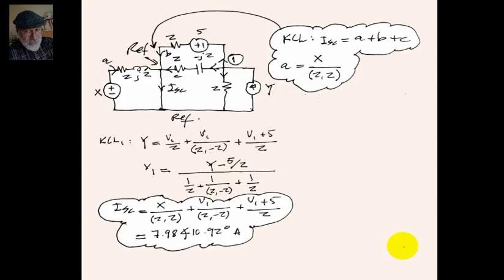We solve this circuit by first replacing the impedance three minus j3 ohms with a wire. To compute Isc, we apply KCL to node one. It results that the short circuit current Isc is the sum of current A coming from the left, plus current C coming from the right, and current B coming from the top. If we can find A, B, and C, we can add them up in KCL to find Isc.